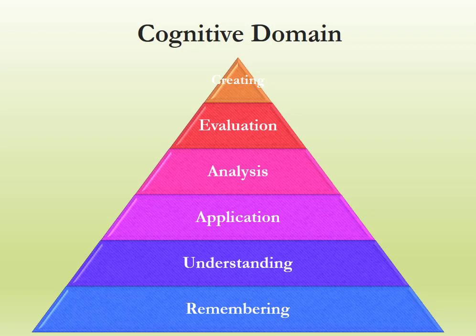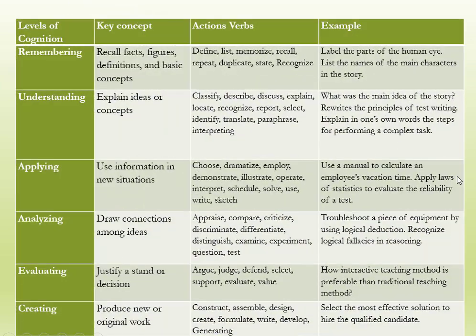In the next slide, I'll show some keywords you can use during assessment techniques to assess a particular level of cognitive domain. For remembering, the key concepts are: recall, fact, figure, definition, and basic concepts. Example: 'Label the parts' or 'List the names of the main characteristics.' Action verbs include: define, list, memorize, recall, repeat, duplicate, state, recognize.